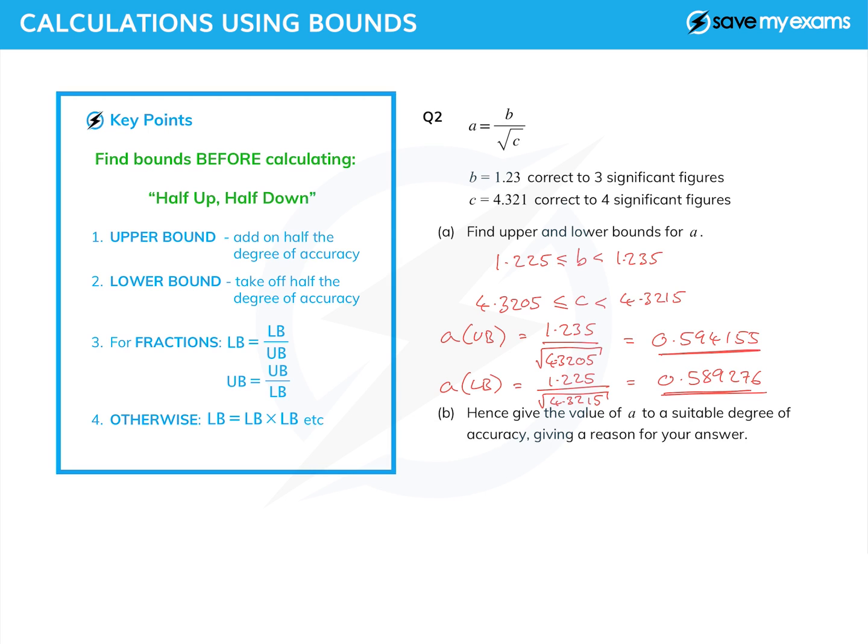And then the extra question: hence give the value of a to a suitable degree of accuracy, giving a reason for your answer. Well let's have a look at these. These are both to six decimal places and they are different. But if we look at them to three significant figures—in this case, okay, let's look at the lower bound and the upper bound.